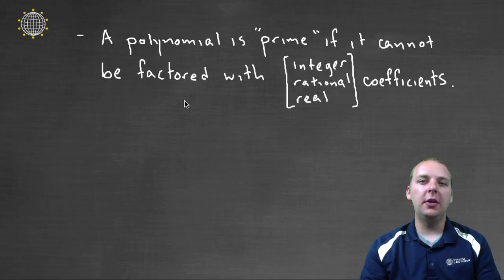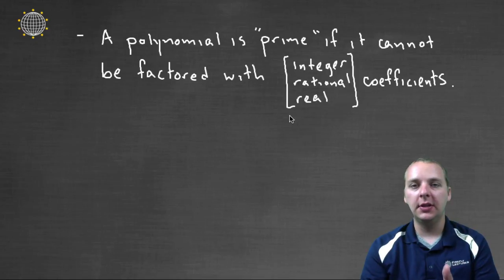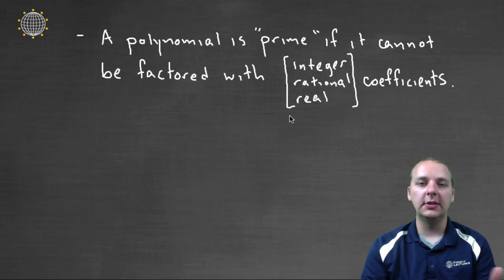but then you have to talk specifically about what type of coefficients you're allowed to have. You might consider it prime if you can't factor it with integer coefficients, or you might mean prime if you can't factor it with rational coefficients or with real coefficients. And so sometimes something will be factorable if you're allowed rational coefficients but not factorable if you're allowed only integer coefficients. And so you need to talk with your instructor about what he or she means when they're talking about prime in a particular chapter.